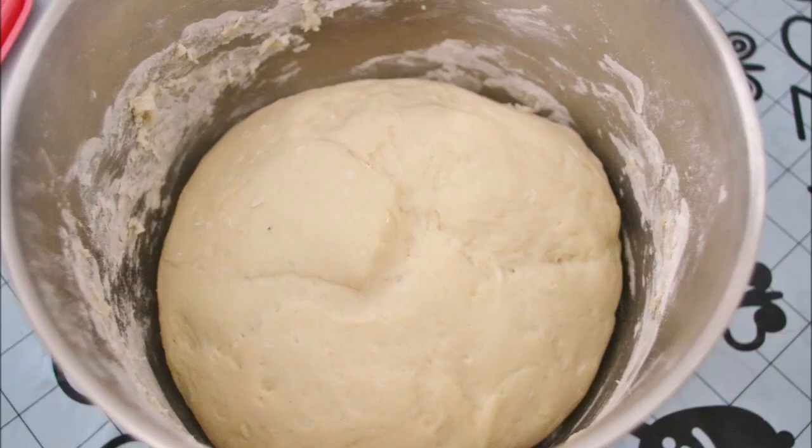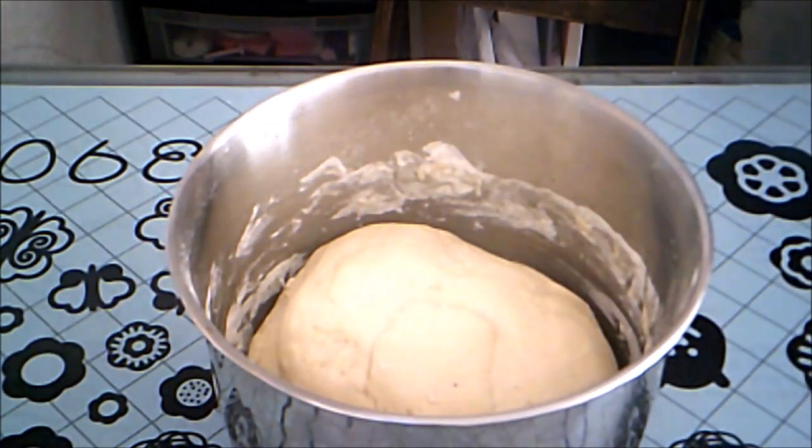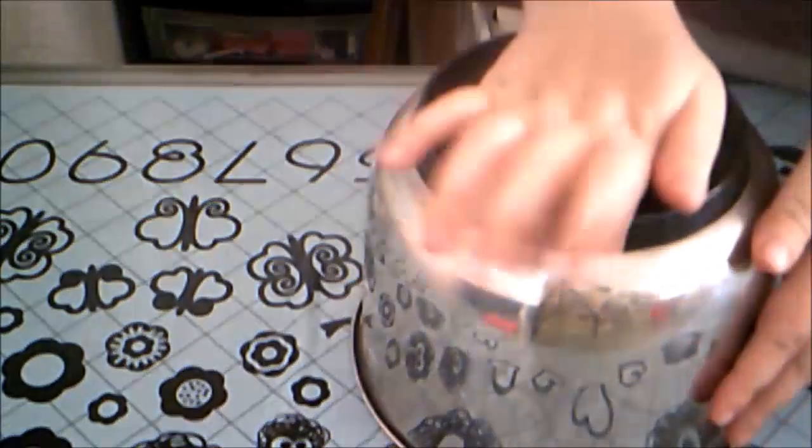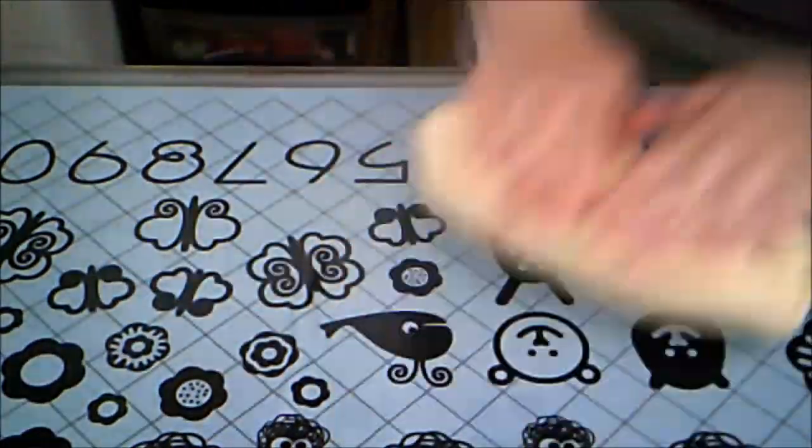Here's my risen dough. Punch it down to let out the excess air. Turn it onto your surface. You may need to pull it away from the sides a bit. Knead it just once or twice and shape it into the loaf you want it to be.